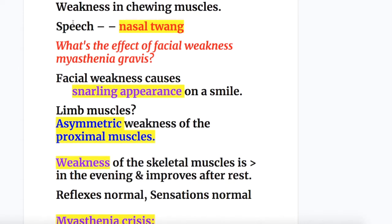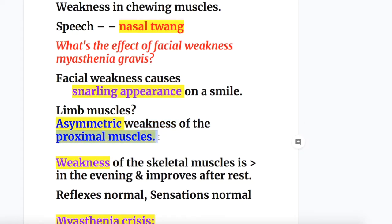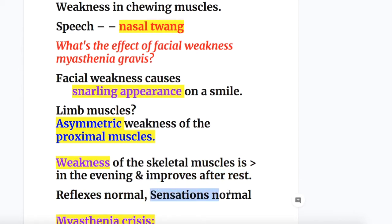There is weakness of the chewing muscles and speech has a nasal quality. Facial weakness causes a snarling appearance on smiling. In the limbs, there is asymmetric weakness or fatigue — not paralysis — of the proximal muscles. The weakness of skeletal muscles is worse in the evening as the day progresses and improves after rest, similar to how angina is relieved by rest. Reflexes and sensations are normal.